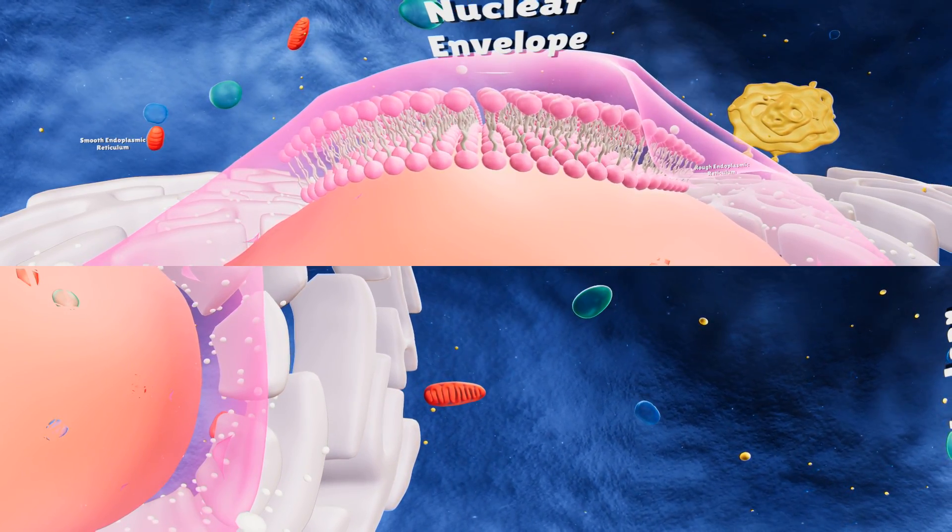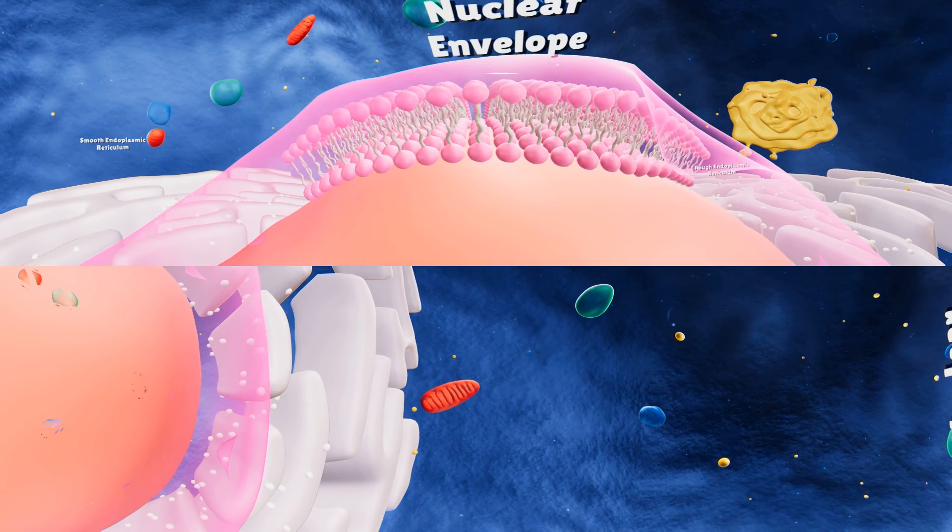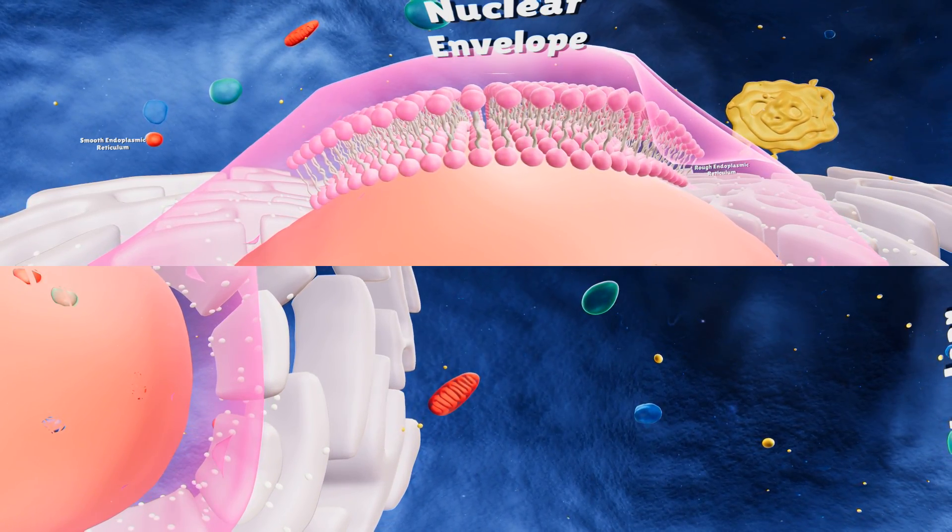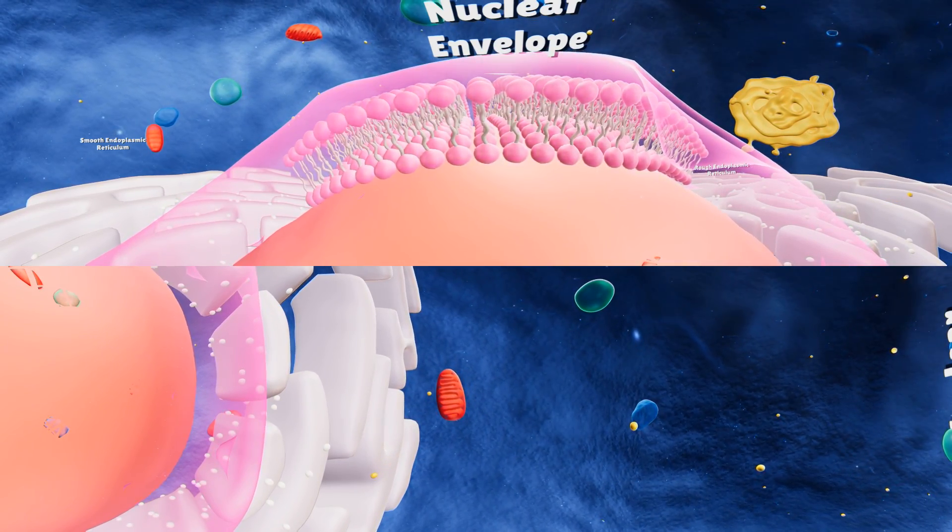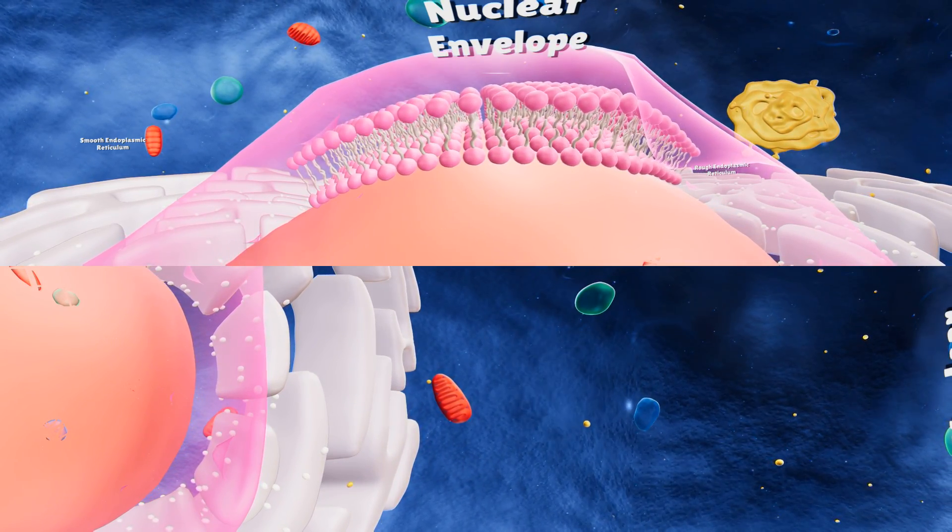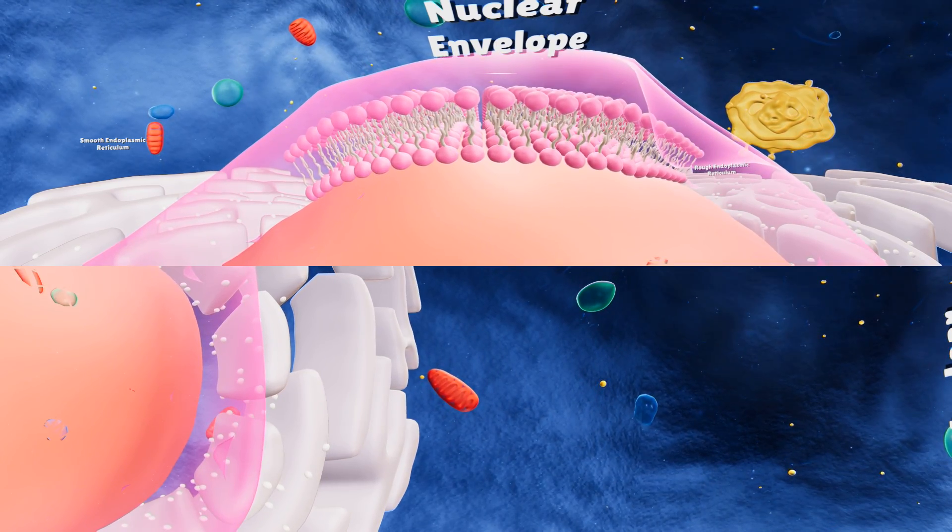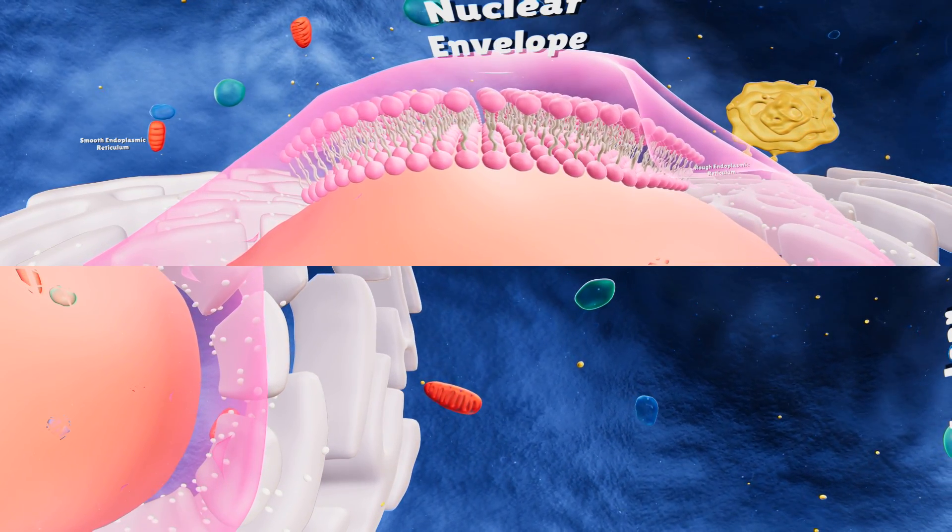Each membrane has a layer of phospholipids. The phospholipids look like a ball with a tail attached to it. The phosphate heads are hydrophilic, meaning they love water. The fatty acid tails are hydrophobic. They hate water.